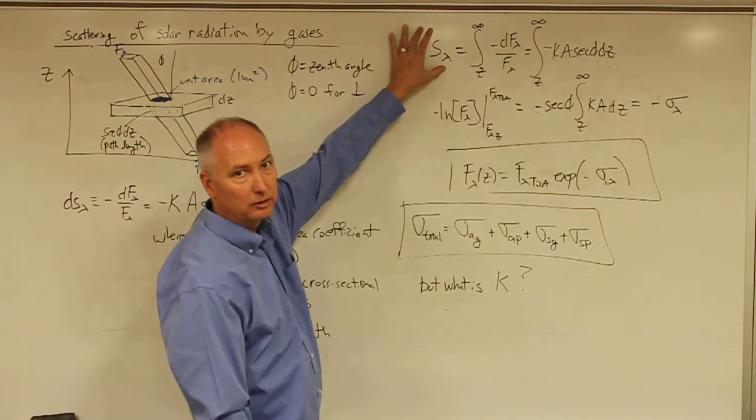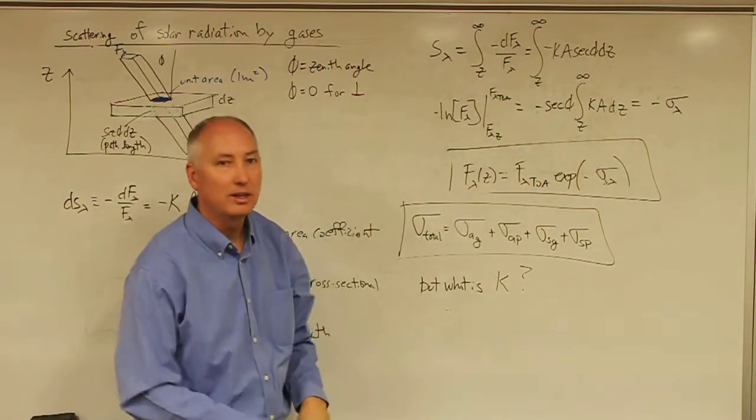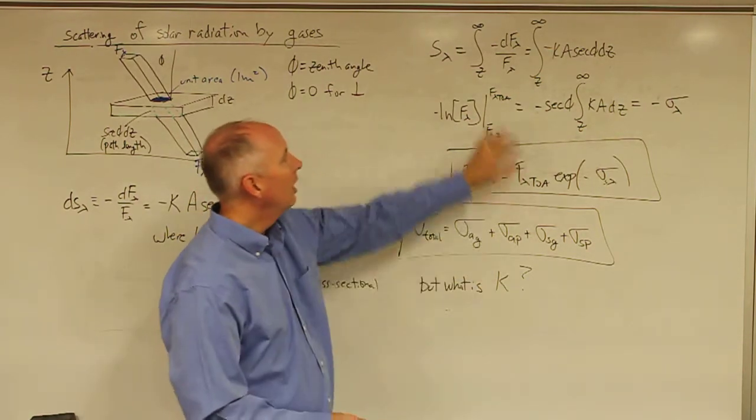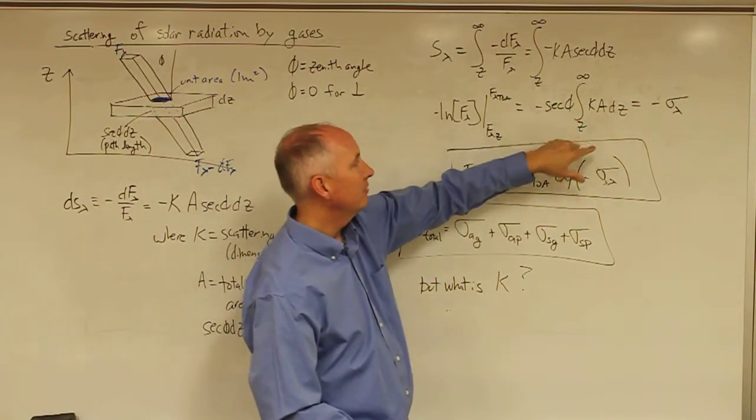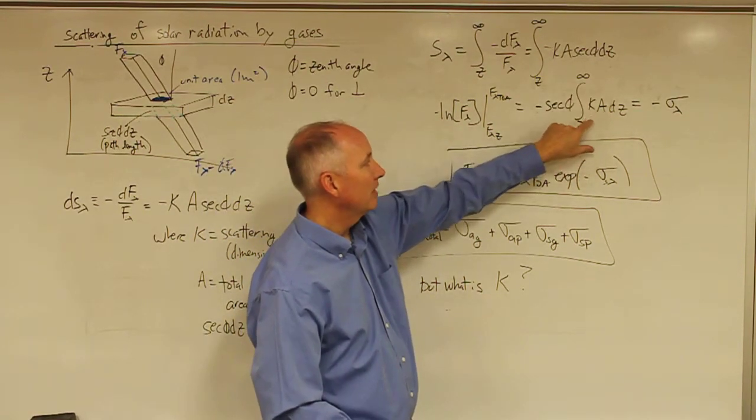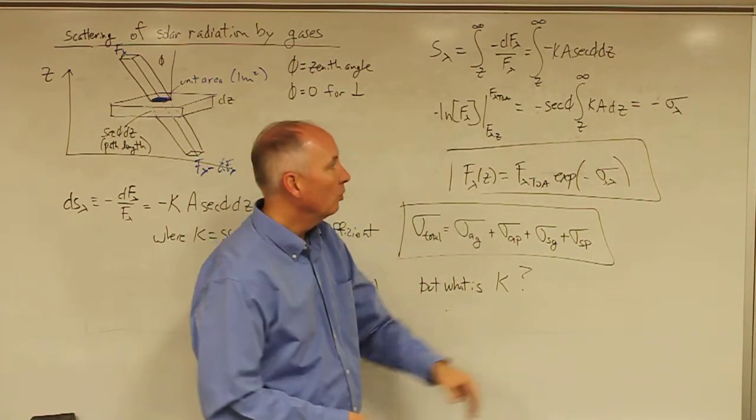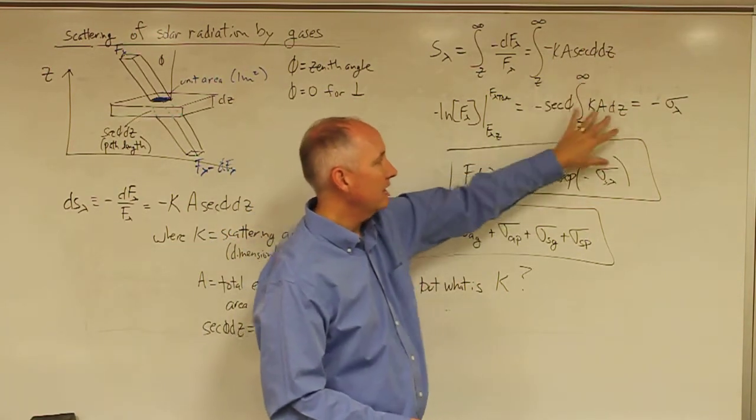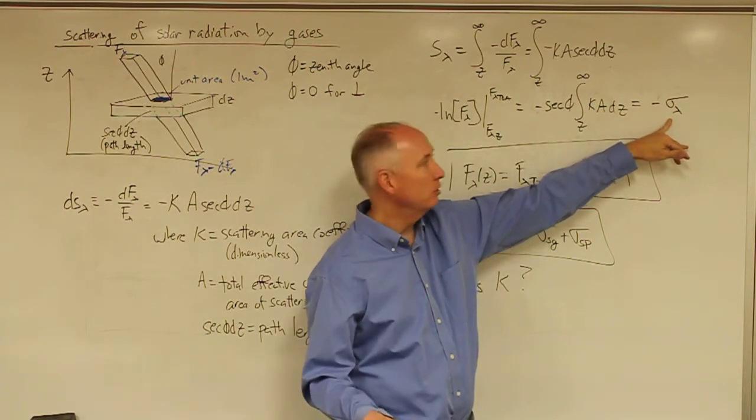If we want to get the total amount of scattering, we have to integrate this equation in the exact same way that we did for the absorptivity. We get the natural log of the irradiance is equal to minus secant phi times the integral of KADZ. And like in an analogous manner, we're going to define this as the optical depth. In this case, it will be the optical depth due to scattering.